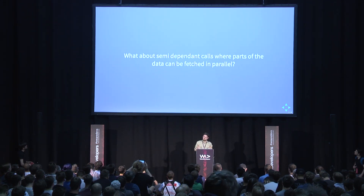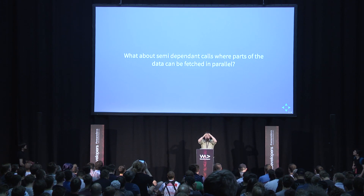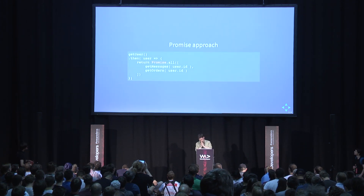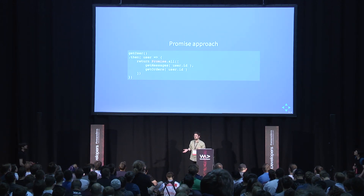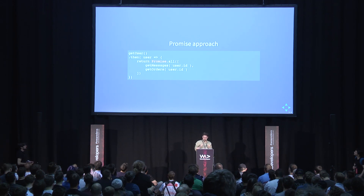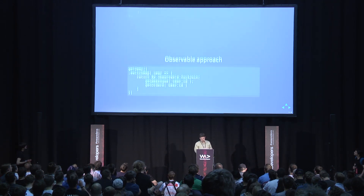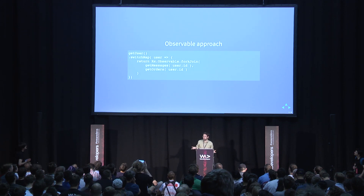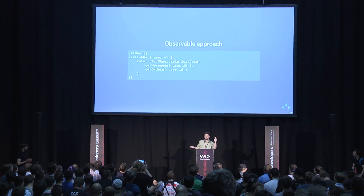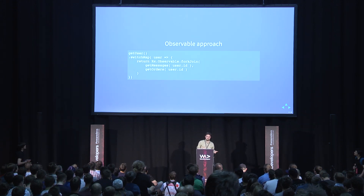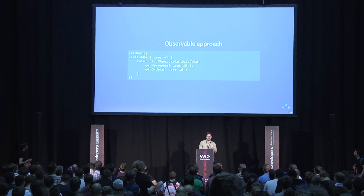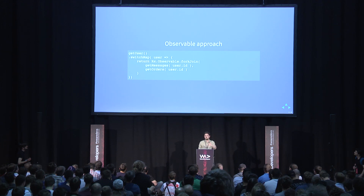What about semi-dependent calls where you can parallelize? With promises you use Promise.all — you list the promises you want to resolve at the same time. In RxJS the exact one-to-one replacement is forkJoin. Now we're armed with knowledge to code exactly what we do with promises, so we can enjoy RxJS and use its added features over promises.